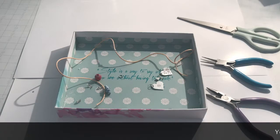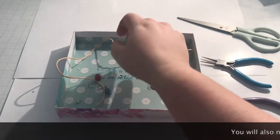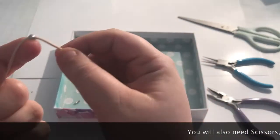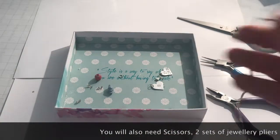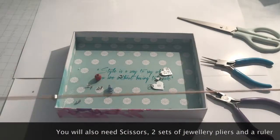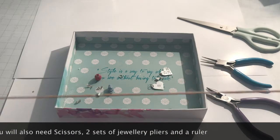So let's get started. First of all I've already attached one crimp bead to this. It's about in the middle, so that it will stop the beads from going any further and stop them moving around.